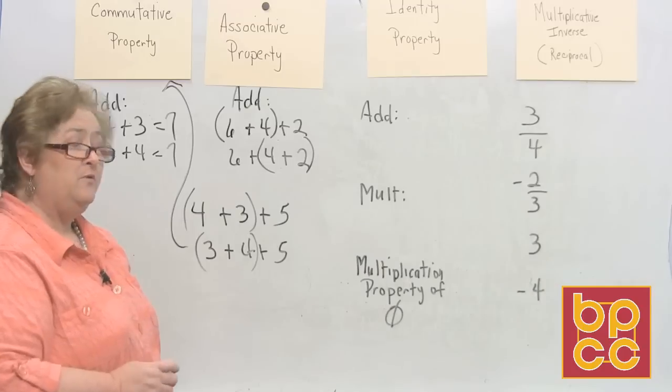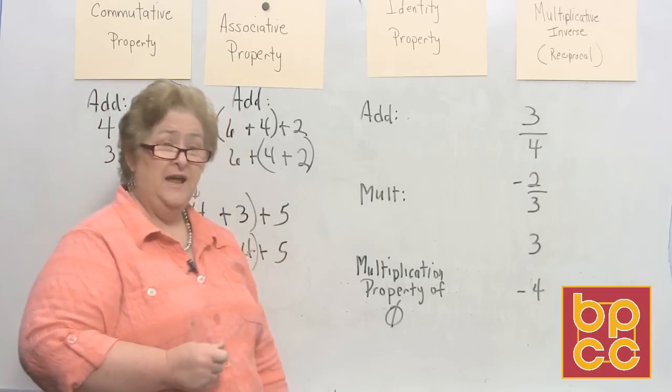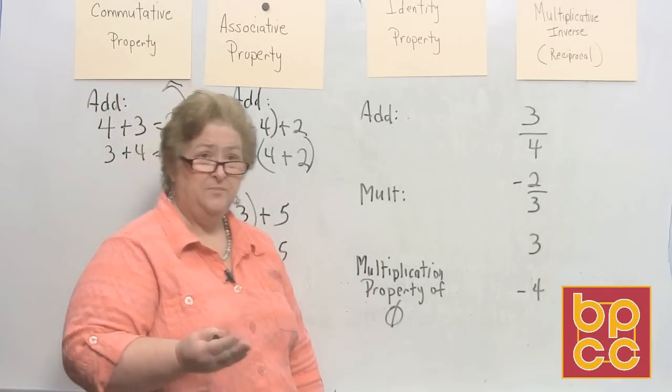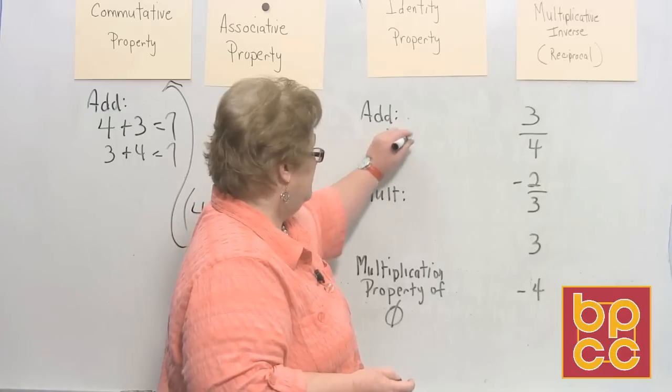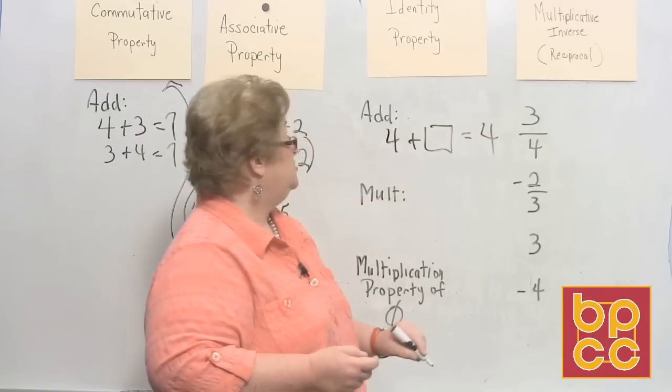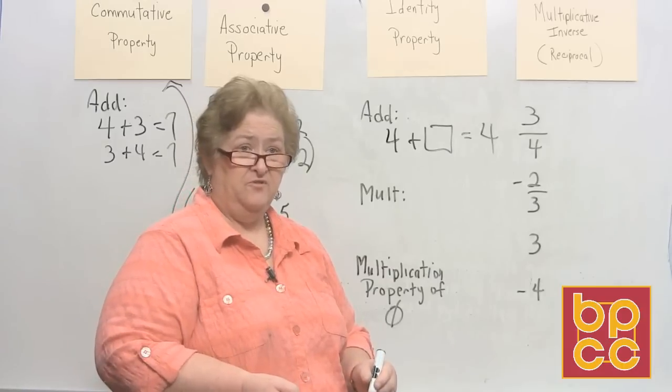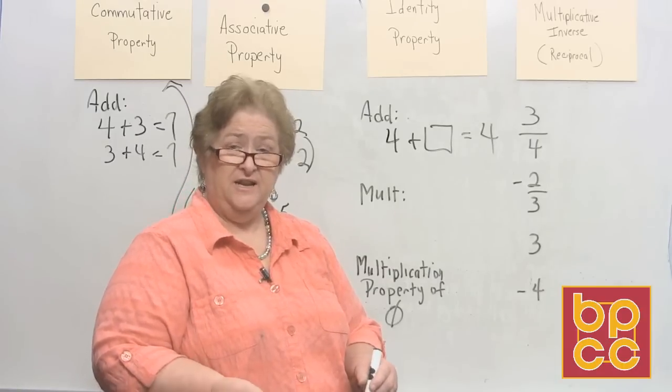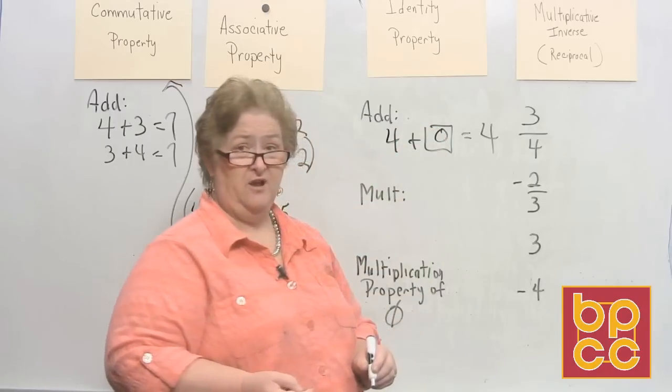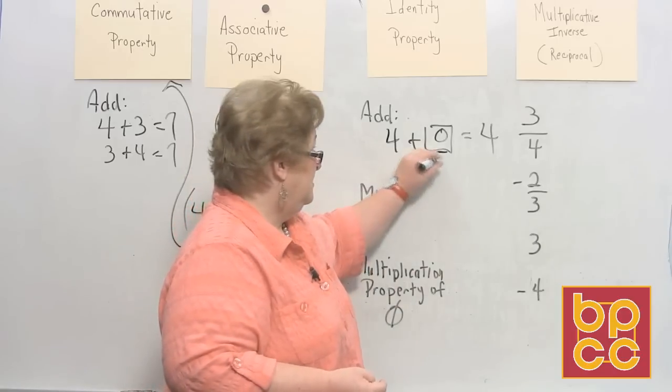Okay, now let's go for what we refer to as the identity properties. There is one for addition and one for multiplication. The identity property for addition simply says this: If I have a number, what can I add to that number to keep it the very same number? Well, that makes sense. If I have the number 4 and I don't want it to change, then let's add what to it? 0. So 4 plus 0 is 4. The identity for addition is 0.